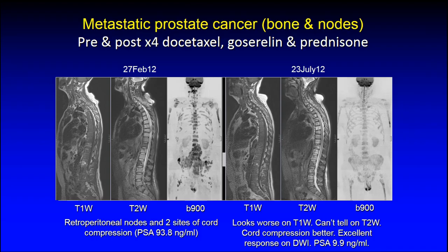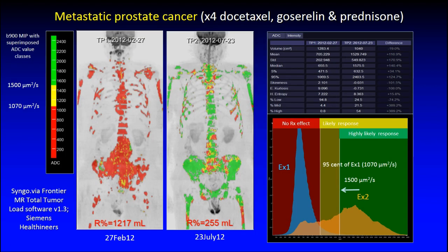Here is a patient responding to docetaxel in prostate cancer. Looking at the T1 sequences alone, you would say this was stable — there is some increase in signal intensity of the bone marrow, although the soft tissue within the central spinal canal has decreased. Looking at the diffusion sequence, there is a reduction in the overall volume of signal intensity abnormality. The ADC histogram increases from about 700 to about 1500, and this increase in ADC is diagnostic of responding metastatic disease.